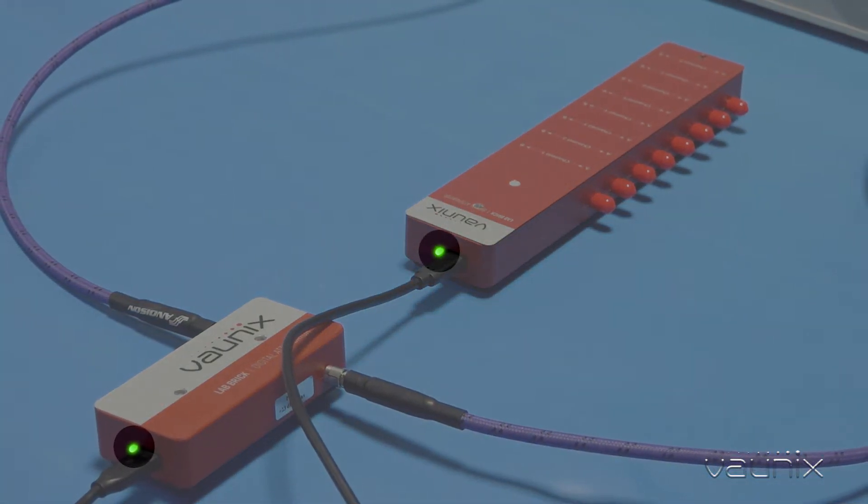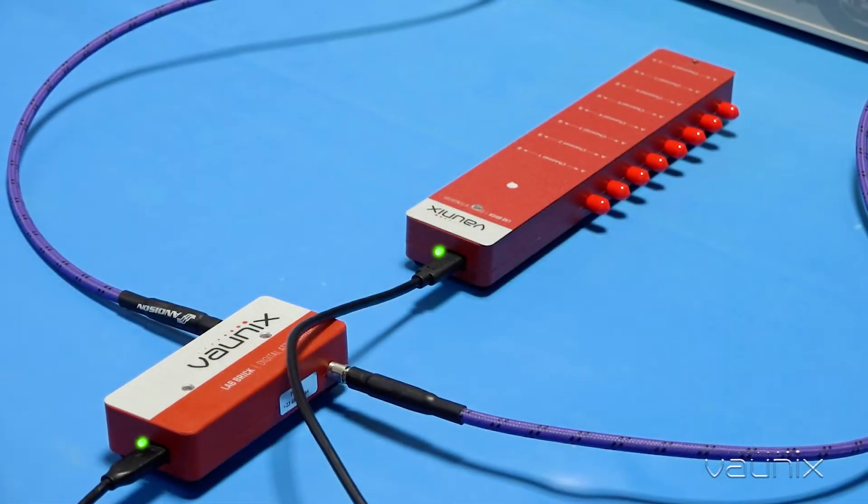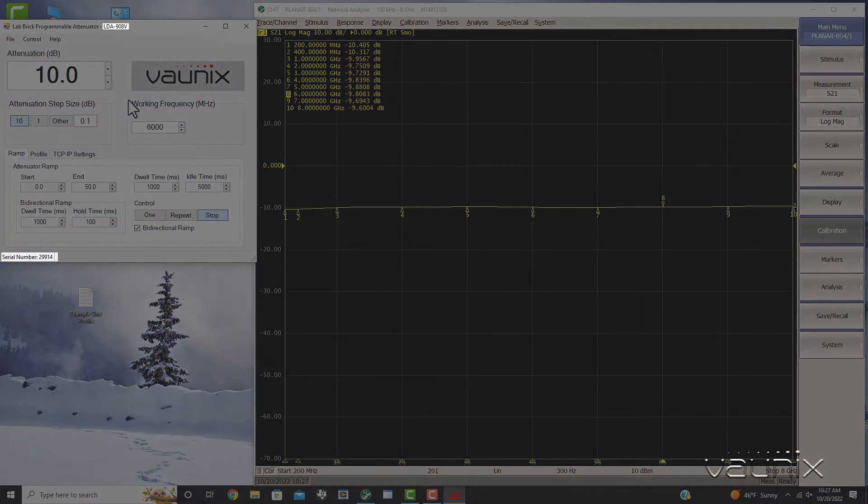The green LED on the attenuator indicates when communication is established, and each device is automatically identified by model and serial number.